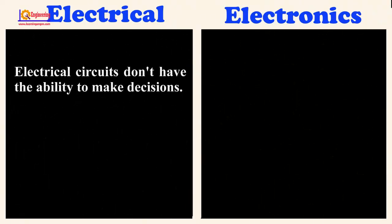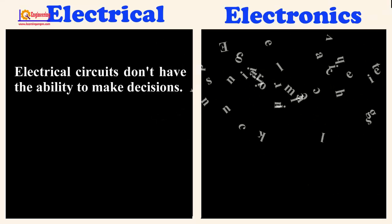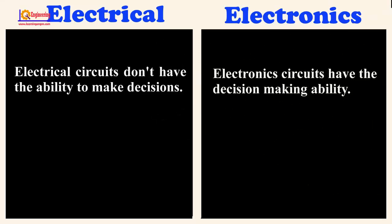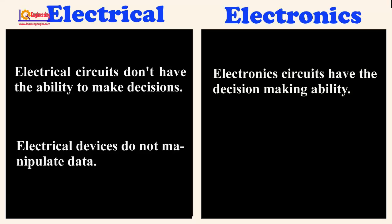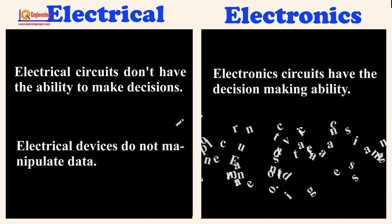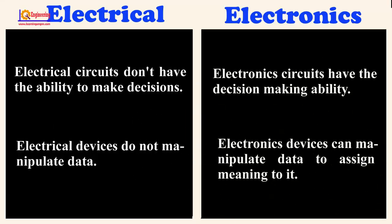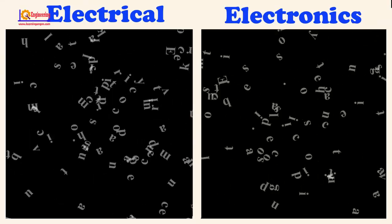Electrical circuits don't have the ability to make decisions. Electronic circuits have decision-making ability. Electrical devices do not manipulate data, whereas electronics devices can manipulate data to assign meaning to it.